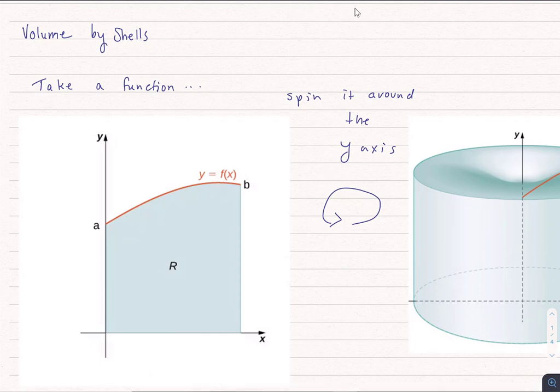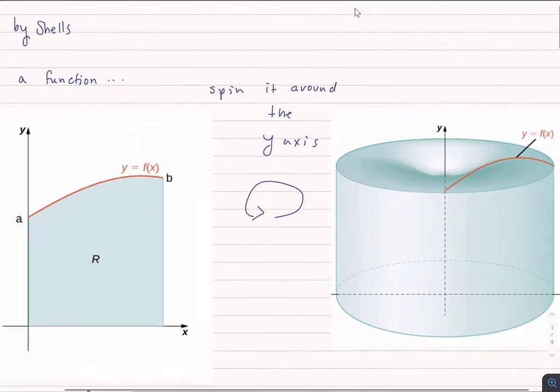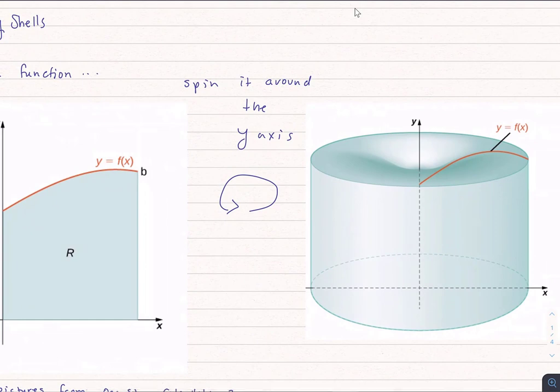We've talked about how to do volume by slicing. There's another thing we can do which is volume by shells. Let's take a function, and instead of spinning this function y equals f of x around the x-axis, we're going to spin it around the y-axis and get a shape something like this.